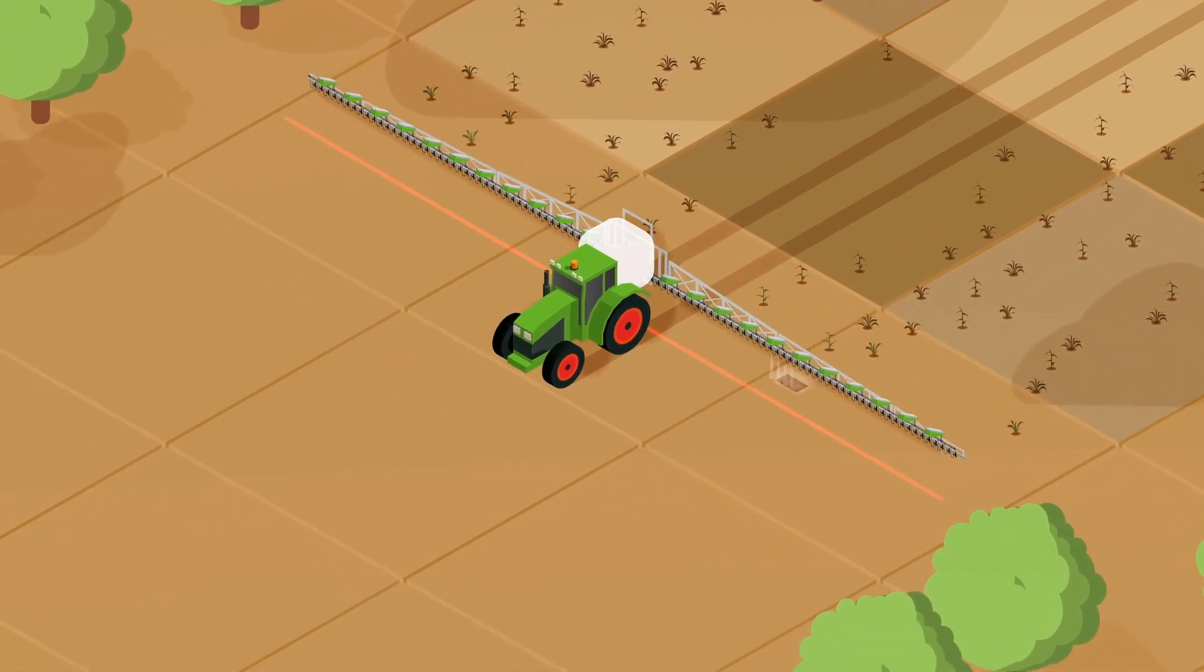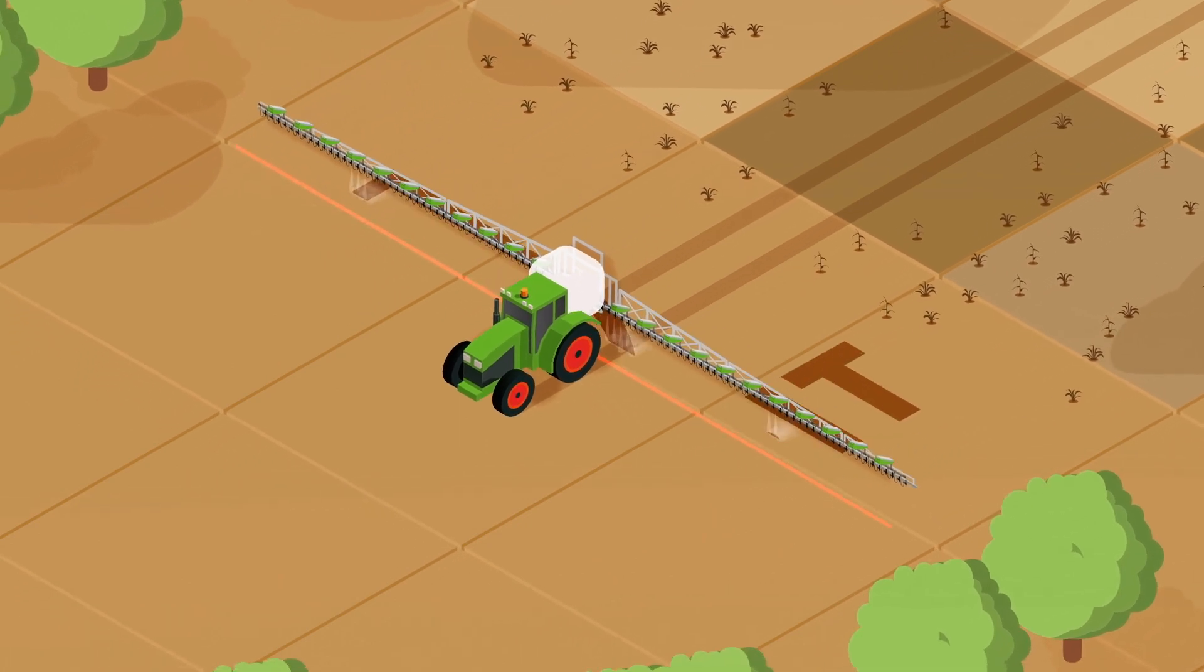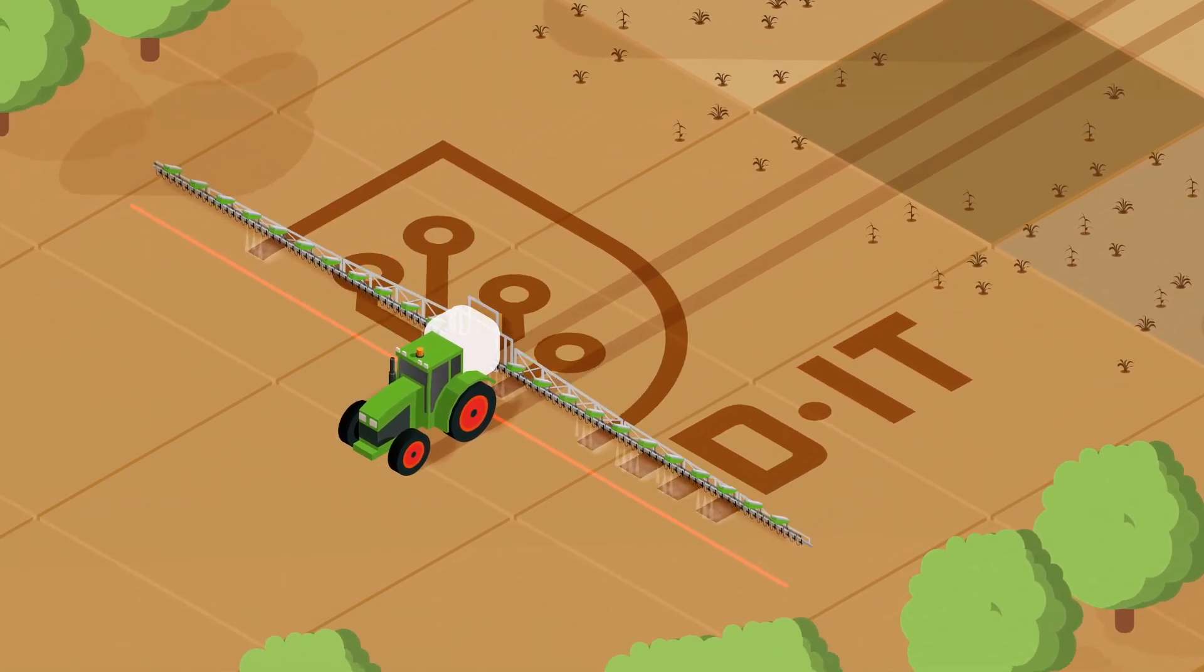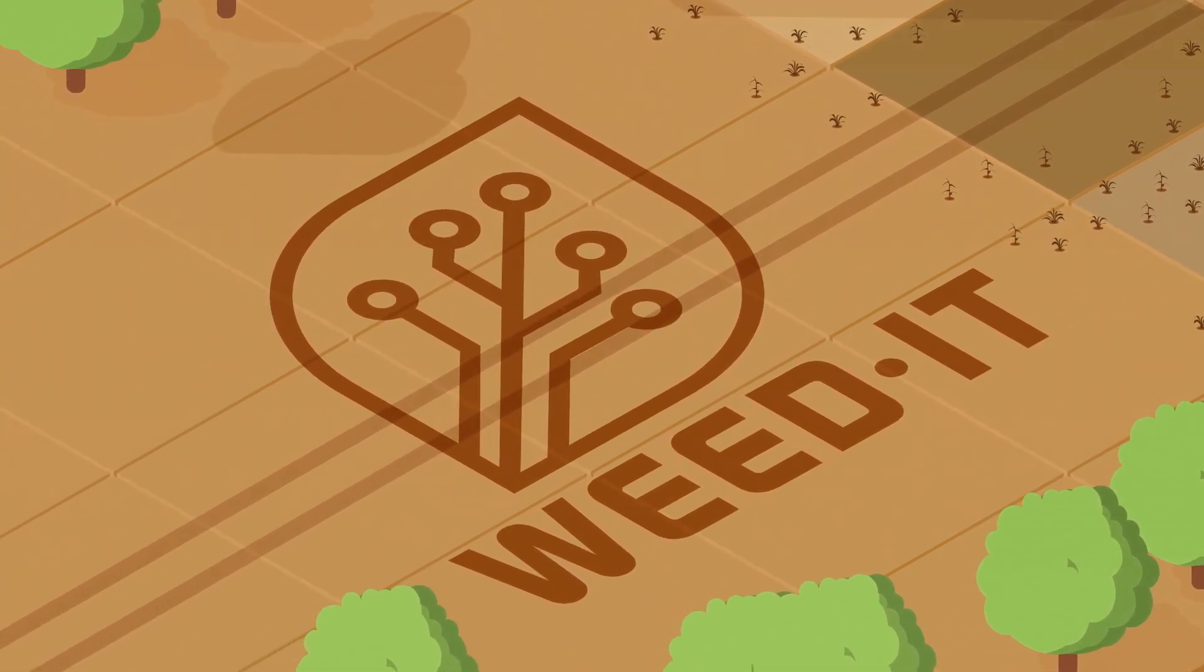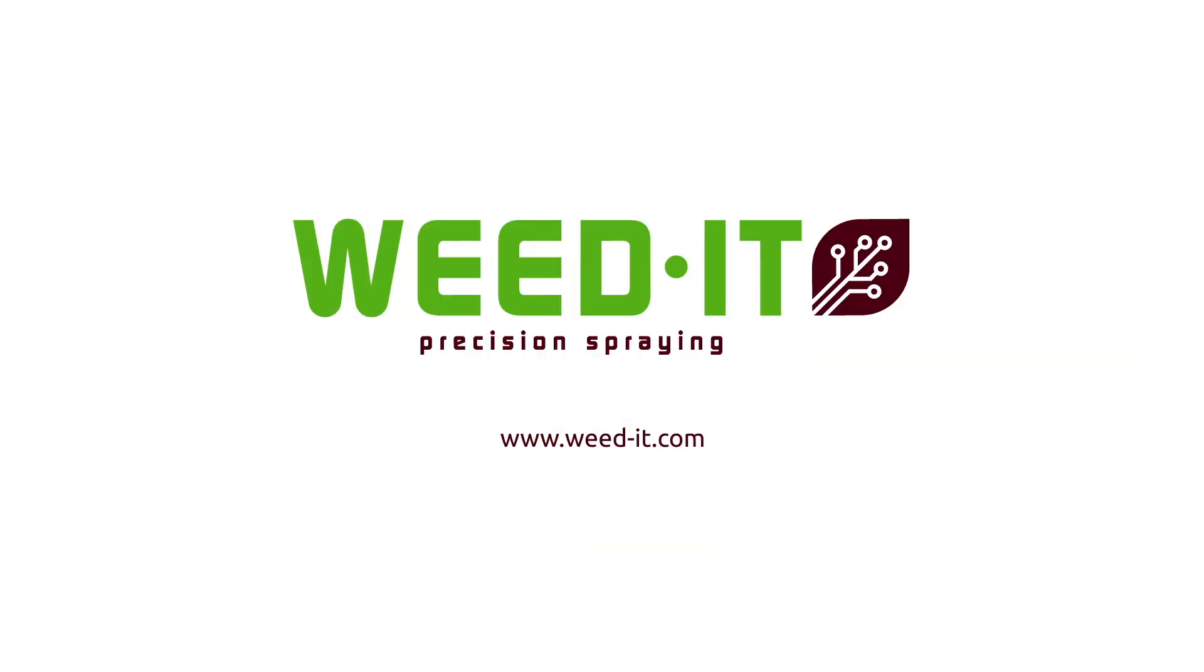This makes Weedit a fast, foolproof, and robust weed elimination system with the highest success rate. Any type of weed, no matter how small, is detected at speeds up to 25 kilometers per hour.